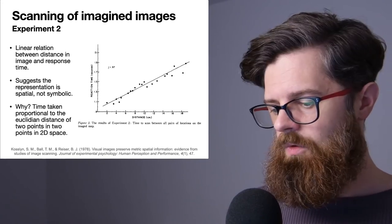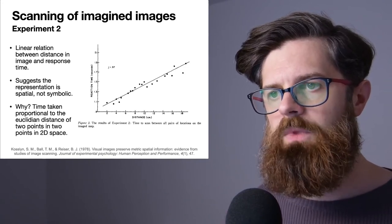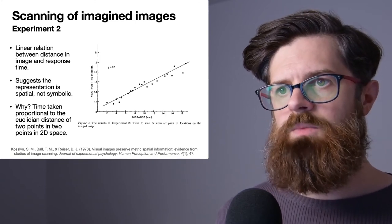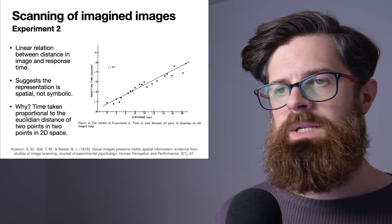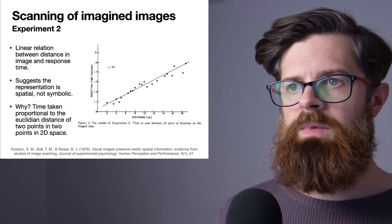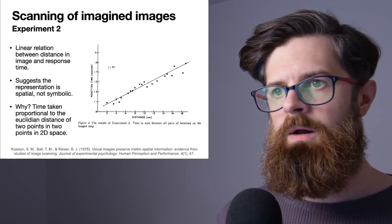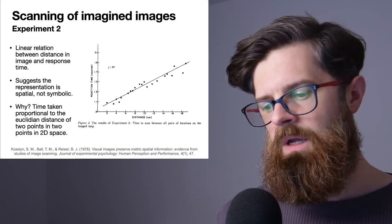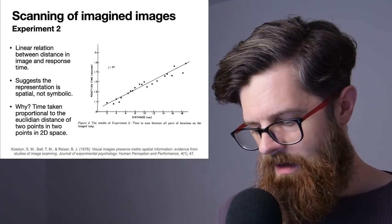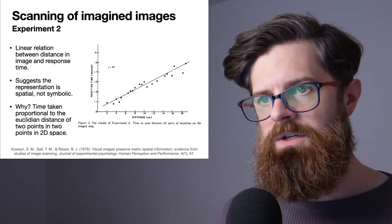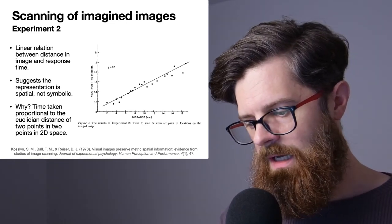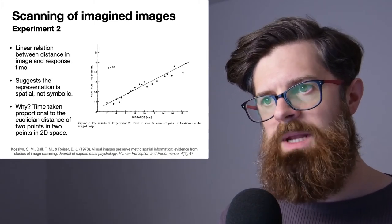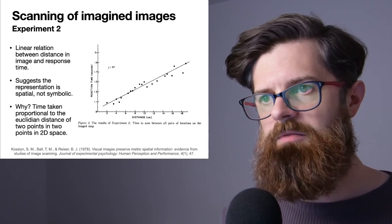We can kind of figure this out because the amount of time it takes the person to mentally simulate the black dot going from one point to another is proportional to the distance of the two points. The map is two dimensional, and so we can say perhaps the person represents the map in this two dimensional space which is kind of making it like an image.